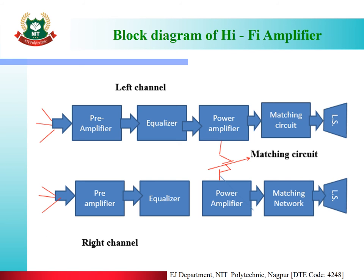Now the block diagram of the hi-fi amplifier. This block diagram has two channels — the left channel and the right channel. In the left channel we can see a pre-amplifier, then a power amplifier, then a matching circuit, and finally the loudspeaker. In the right channel we have a pre-amplifier, equalizer, power amplifier, matching network, and loudspeaker. This is the complete block diagram of the hi-fi amplifier.